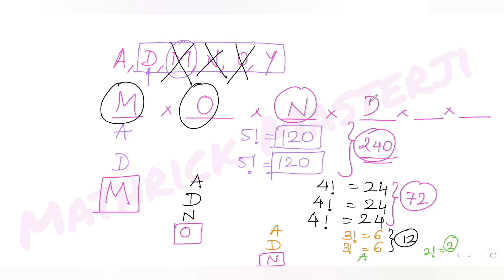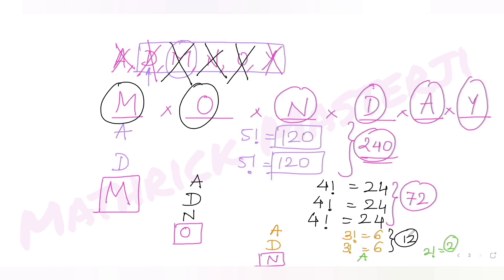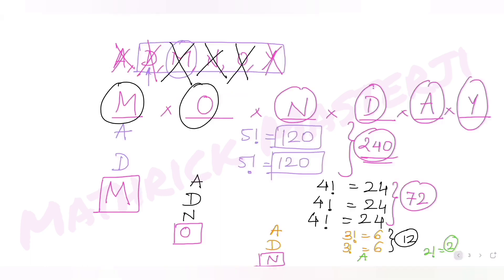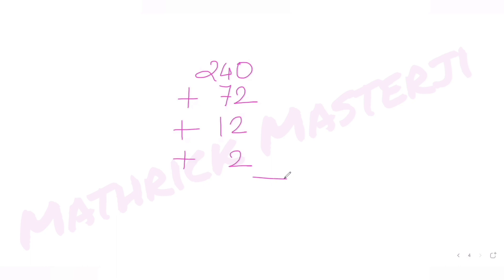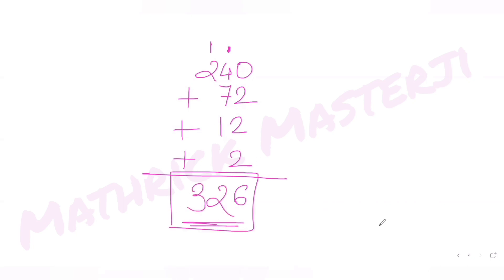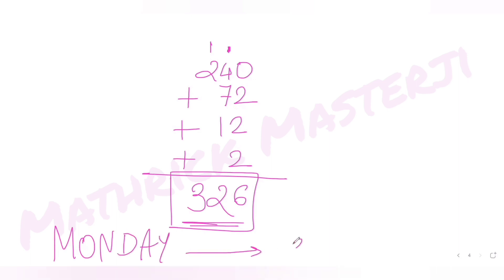Then D in the fourth position gives another 2 words. After that comes A, and then Y is the only letter left for the last place, giving us the word MONDAY. Adding everything up: 240 + 72 + 12 + 2 = 326 words come before MONDAY. Therefore, MONDAY has the rank of 327.